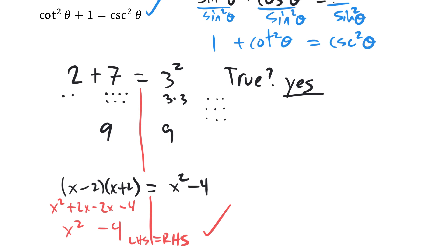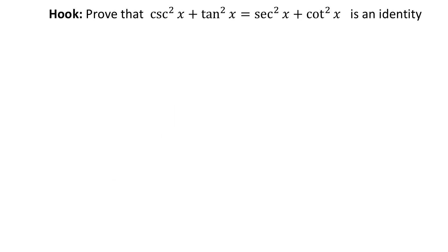This is the general method we use whether checking numbers, checking a solution in an equation, or checking a general formula — and we want to use this method for trig identities as well. So let's prove that cosecant squared x plus tan squared x equals secant squared x plus cotan squared x. This formula isn't on the formula sheet, but I claim it's an identity. We'll draw a line down the middle — we don't want to be actually solving it, just checking that it's true. Don't move anything from one side to another.